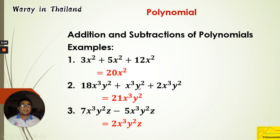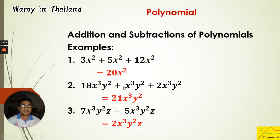Example 2: We have 18x³y² + x³y² + 2x³y². Checking the variables and powers — x³y², x³y², x³y² — they are all like terms. We add the coefficients: 18 plus 1 (note there is an implied coefficient of 1) plus 2 equals 21. So the answer is 21x³y².